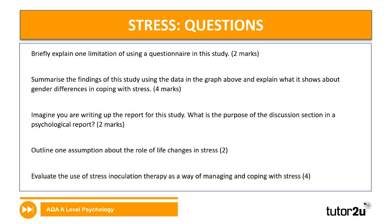Five further stress questions: briefly explain one limitation of using a questionnaire in this study (two marks); summarise the findings using the graph and explain what it shows about gender differences in coping with stress (four marks); what is the purpose of the discussion section in a psychological report (two marks); outline one assumption about the role of life changes in stress (two marks); and evaluate the use of stress inoculation therapy as a way of managing and coping with stress (four marks). Allow roughly 20 minutes.